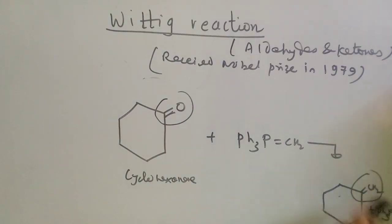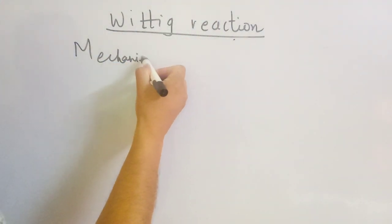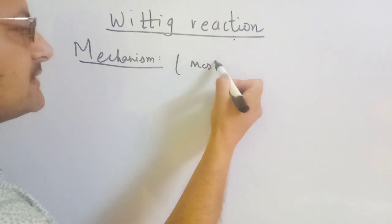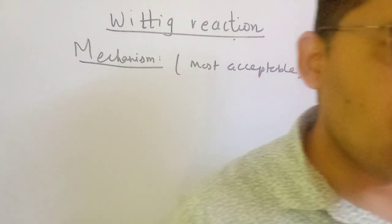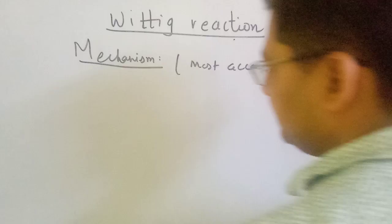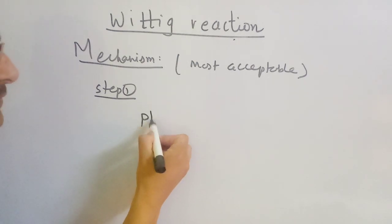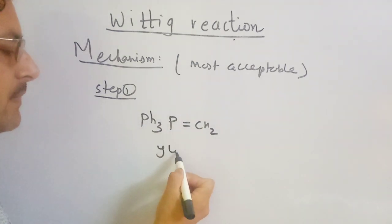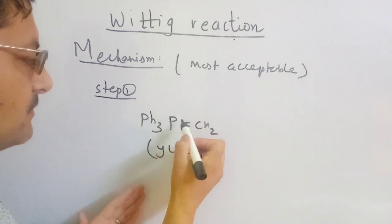Now we need to know about the mechanism of the Wittig reaction. How does the mechanism work? The most acceptable mechanism will be discussed in 3 steps. Step 1 involves the phosphorus ylide, which has a phosphorus-carbon double bond — the pi bond acts first.